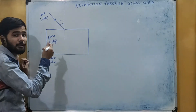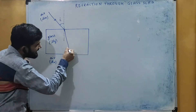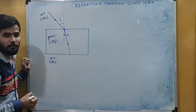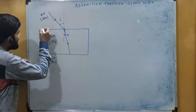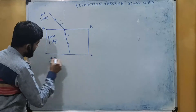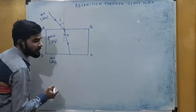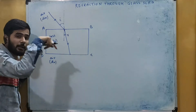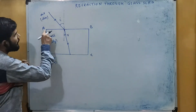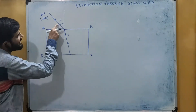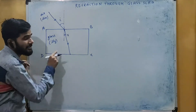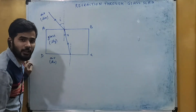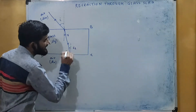We can assume this interface to be AB and the next interface to be CD. Now here we also have to find the angle of incidence because now the light ray is incident on this surface CD. For surface AB we can say this is the incident ray and this is the refracted ray, but for surface CD this line will be the incident ray. So here we have to draw a normal line in order to see the angle of incidence. Let us assume this angle to be angle of incidence i1.